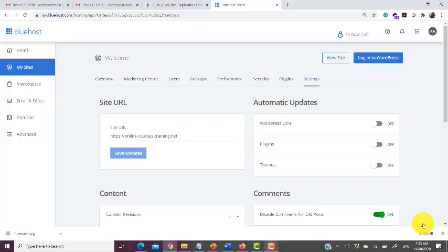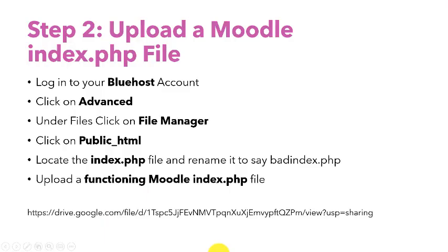That is all that is required — you have now turned off automatic updates because you don't really need WordPress on this site. That's all for Step 1. Step 2 is only needed if you are not able to access your Moodle site at all and it's just showing WordPress instead.